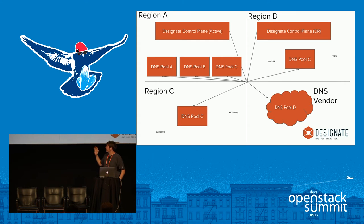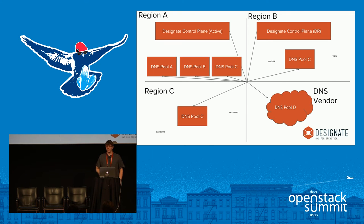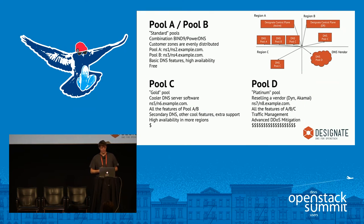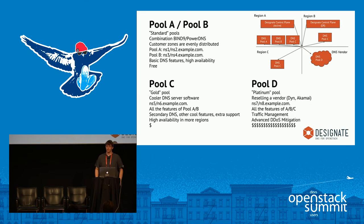Here's an example of a public cloud setup with three regions: Designate's control plane running active in one region and in disaster recovery in another. In this example we have four pools — A, B, C, and D. Pools A and B are simple everyday pools running in one region. You might combine Bind9 and PowerDNS — our most popular drivers — so that when Bind has a CVE, not all of your fleet is affected.